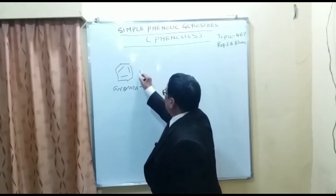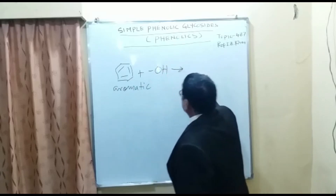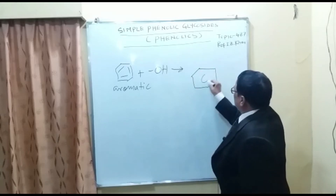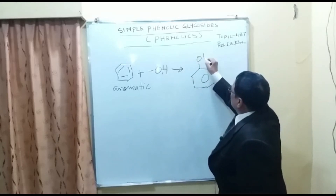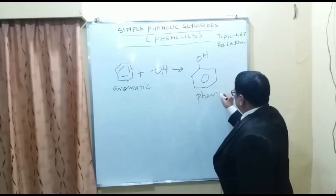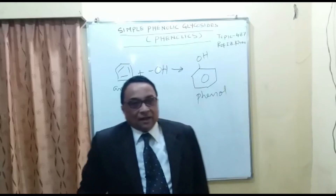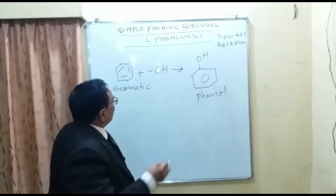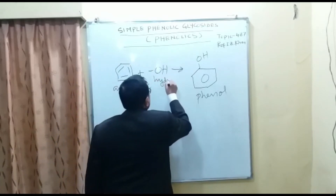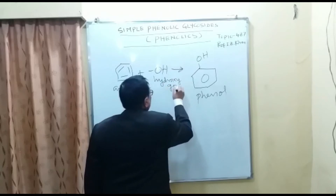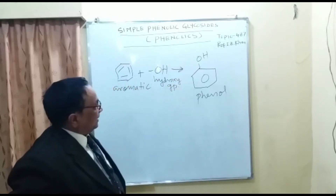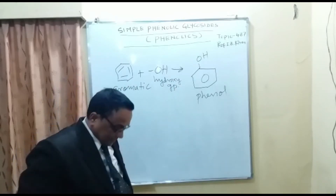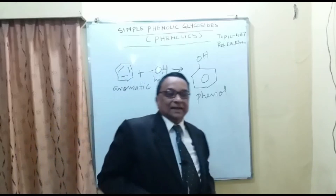If one hydroxy group is attached to the aromatic nucleus, you get the structure of phenol. So phenol means where the aromatic ring is linked with a hydroxy group, and that compound is called phenolic. These phenolics exist universally.